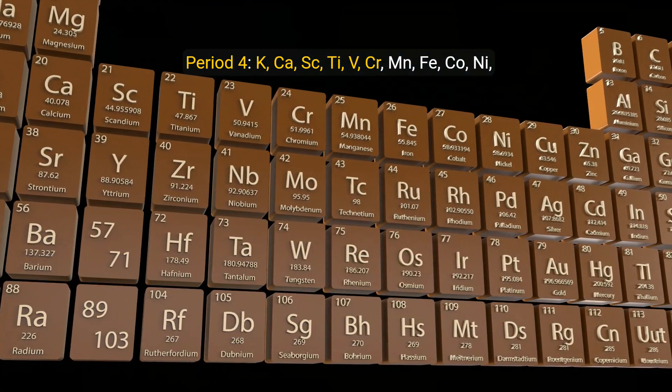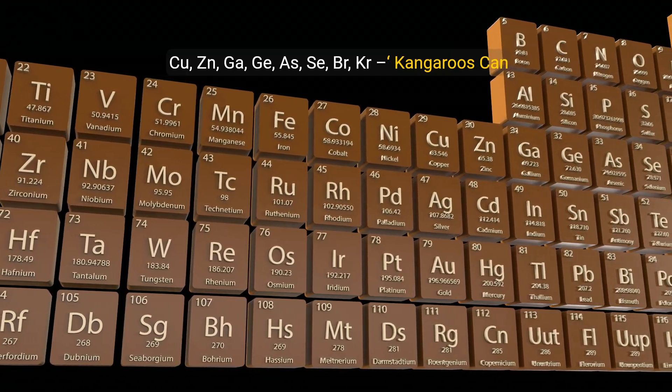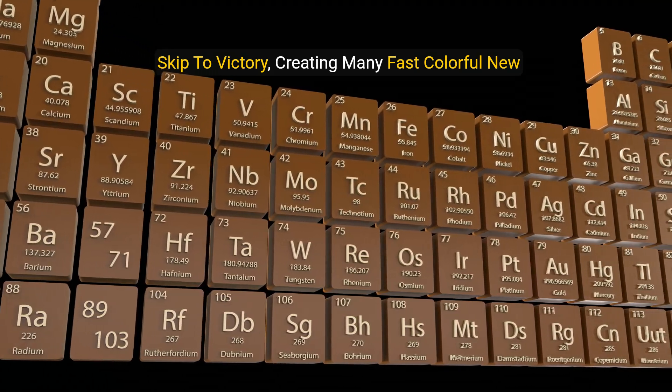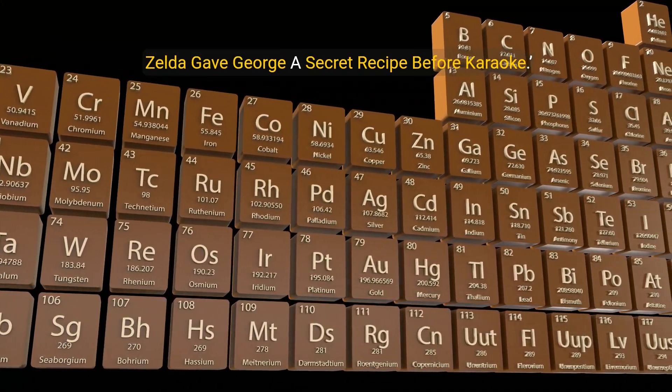Period 4: K, Ca, Sc, Ti, V, Cr, Mn, Fe, Co, Ni, Cu, Zn, Ga, Ge, As, Se, Br, Kr. Kangaroos can skip to victory, creating many fast, colorful new cupcakes. Zelda gave George a secret recipe before karaoke.